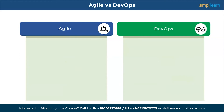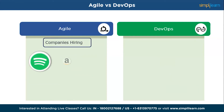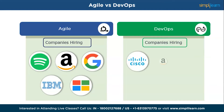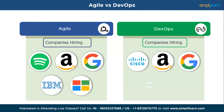Some notable companies known for focusing on Agile and frequently hiring in this area are Spotify, Amazon, Google, IBM, Microsoft, and many more. Some companies actively hiring and known for their prominence in DevOps include Cisco, Amazon, Google, Infosys, Microsoft, and many more.